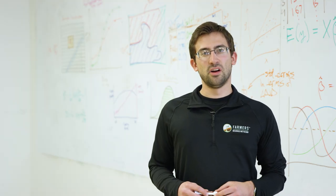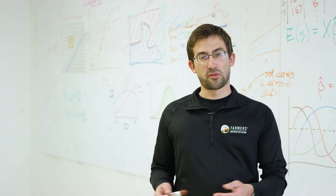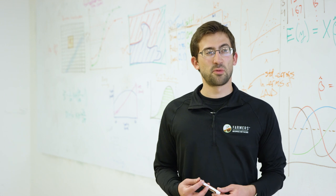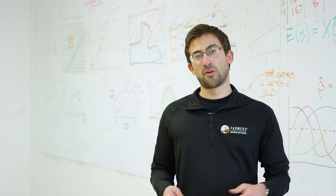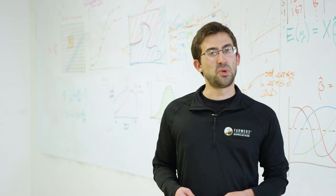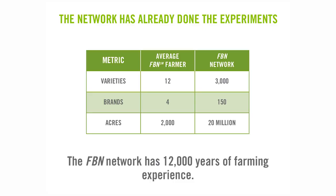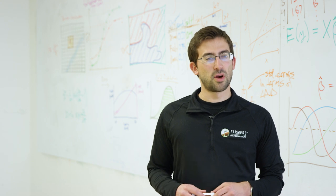One way around this problem is to take advantage of the experiments that other farmers in FBN are already doing. Even though an individual farmer only plants at most 10–15 varieties in a given year, FBN has observed data on over 3,000 varieties, giving us much greater coverage of what's on the market. Aggregated across all of the network and all historical data, FBN has accumulated more than 12,000 years of collective farming experience from our members.